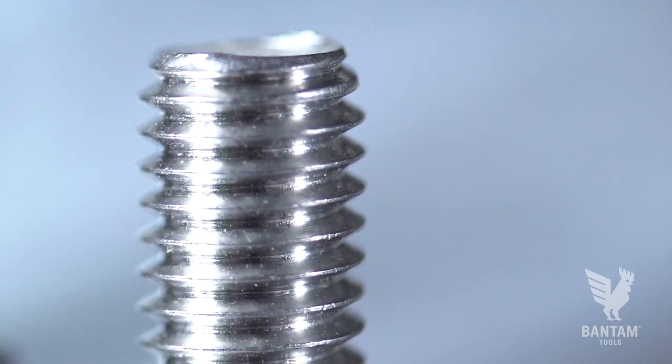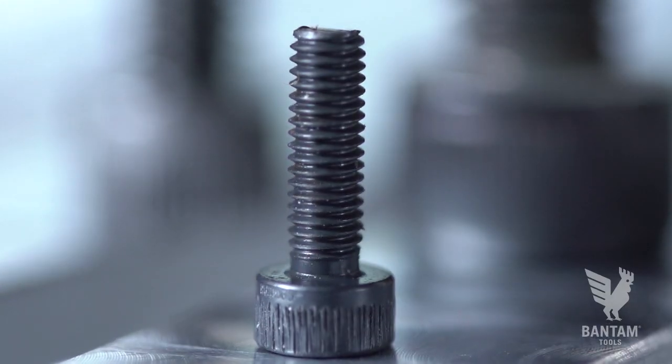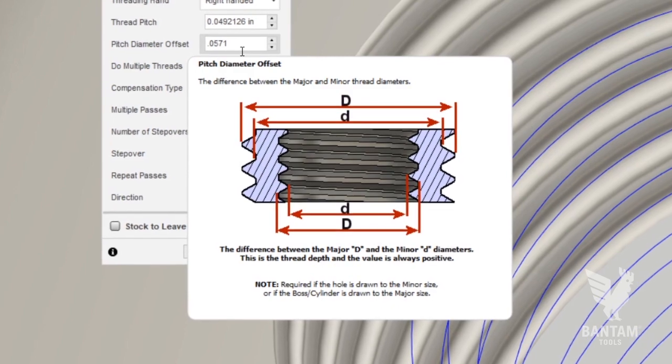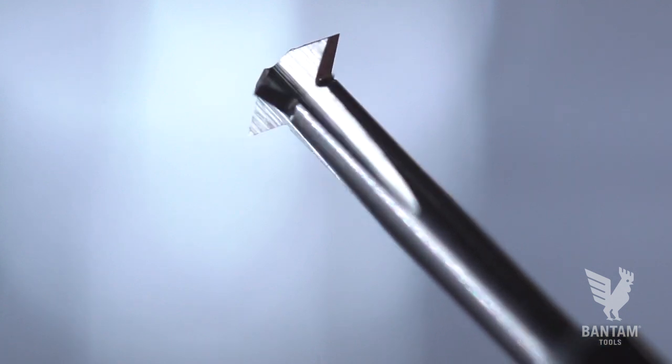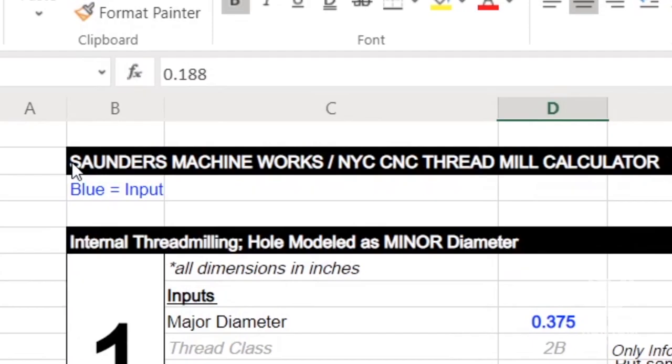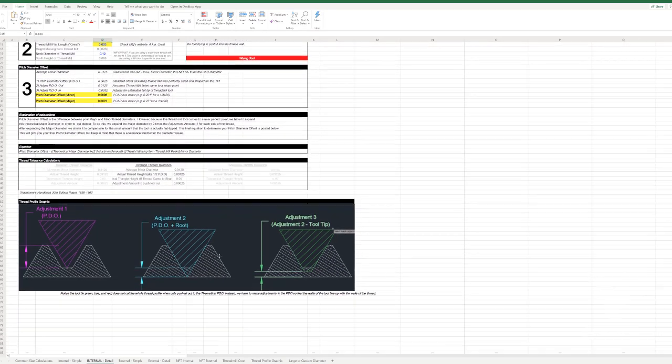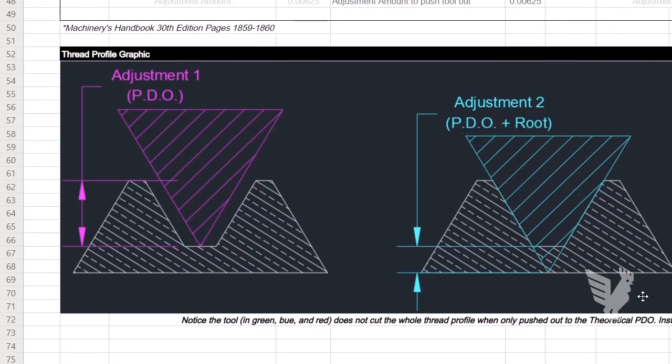The other number is our pitch diameter offset. Every machine screw has a major and minor diameter, marking the respective crest and root of the threads. The reason why you can't just blindly input these numbers is because the tools we use for thread milling don't always come to a fine point. They're rounded off. The calculator takes this into account and spits back out a pitch diameter offset. Again, more info on this in John's video.